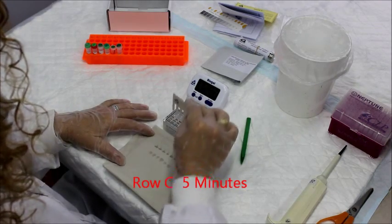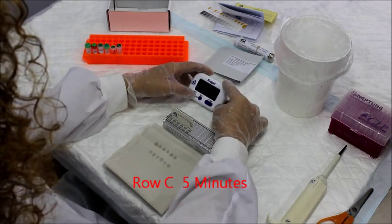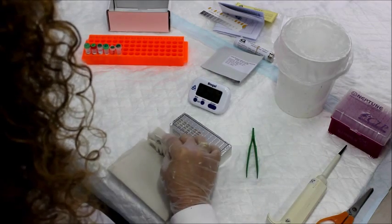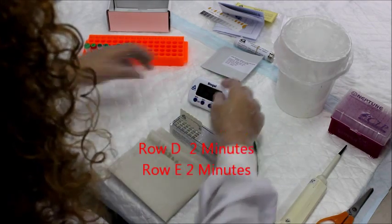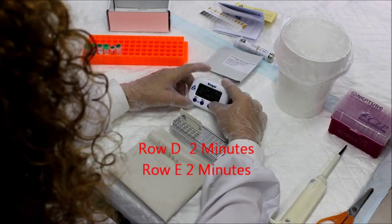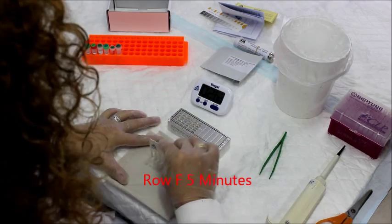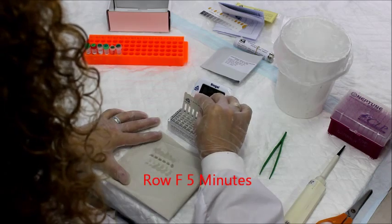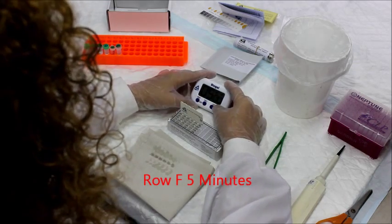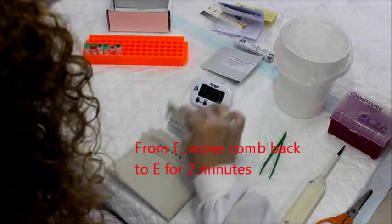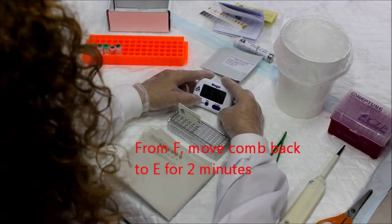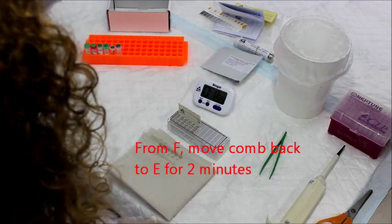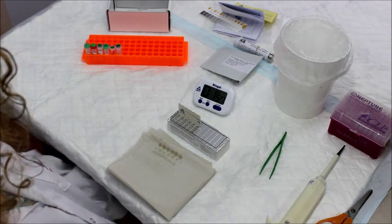Place the comb into the remaining wells, row D and E for two minutes, and the last well, which is row F, for five minutes. Upon completion of the color development in row F, move the comb back to row E for the next two minutes for color fixation. Take the comb out and let the comb dry for one to ten minutes.